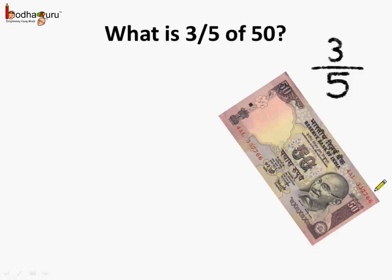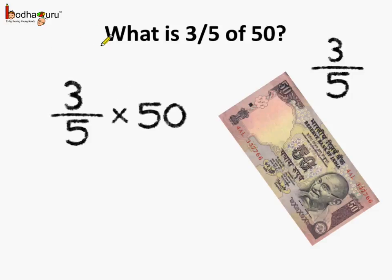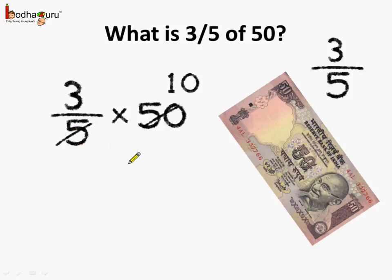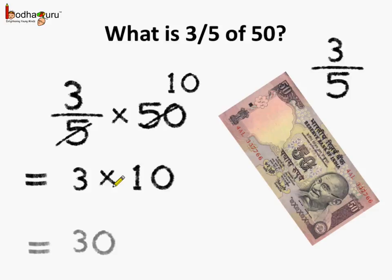Taking another example — what is 3 fifth of 50 rupees? We need to multiply the fraction 3/5 by the whole number 50, so it is equal to 3/5 multiplied by 50. The whole number 50 is multiplied by the numerator. Reducing the fraction — 5 tens are 50 — so this reduces to 3 into 10 which is equal to 30. So 3 fifth of 50 is equal to 30 rupees.